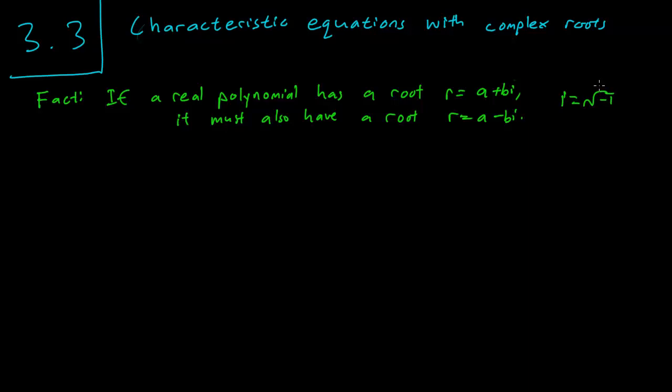And it turns out we can use this fact to write down general solutions in a better way. So first, let's write down a very important fact about taking exponentials of complex numbers. If we use Taylor's theorem in calculus 2, we can calculate that e raised to the i theta is equal to cosine theta plus i sine theta. And this is called Euler's formula.